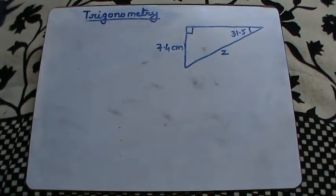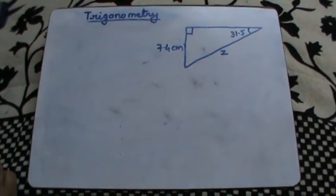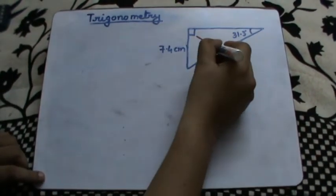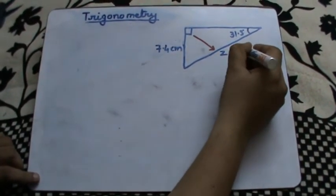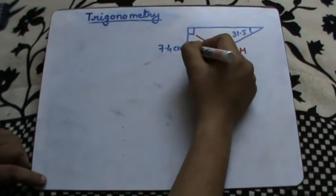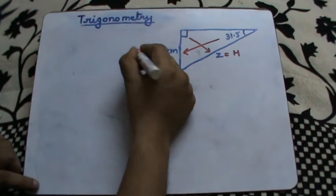The first thing we do is mark the triangle. Opposite to the right angle we have the hypotenuse marked as H, and opposite to the angle it's marked as O, and the remaining one is A.